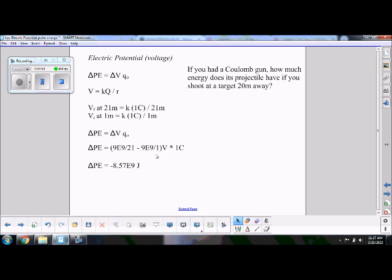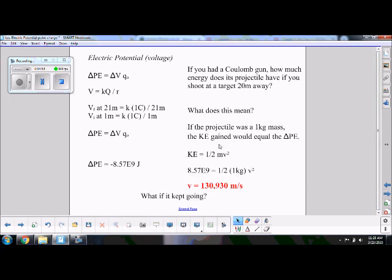So we can also calculate how fast it's going. So if we look at the kinetic energy, you've got that 8.57 times ten to the nine joules of kinetic energy. Remember, kinetic energy is always positive. So it lost that much potential. It gained that much kinetic. That's why it's a negative here and a positive here. Set that equal to 1.5 mv squared. And we'll say it's a kilogram just to make the math easy. And you get really, really, really, really, really fast. Huge amounts of speed.